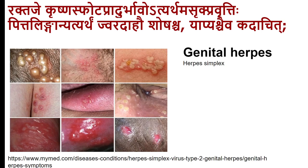Raktaja Upadamsha: Krishna spots (blackish lesions), athyartha srava (excessive discharge), Pitta-like features, Dvara Daha (burning), Shosha (dryness), and yapya (palliative only). These are exactly the clinical symptoms of genital herpes.